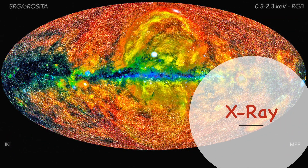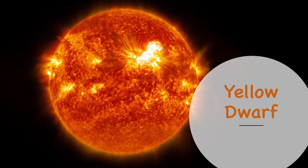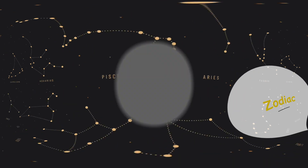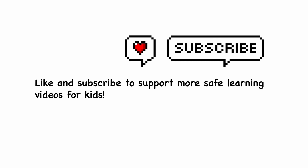X is for x-ray. Y is for yellow dwarf. Z is for zodiac. Do you like looking up at the stars? Like and subscribe to support more safe learning videos for kids.